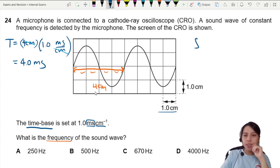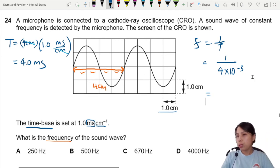Now we can find our frequency. Frequency is 1 over T. So 1 over 4 times 10 negative 3. We should get 250 hertz.